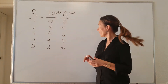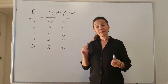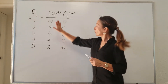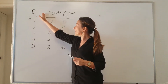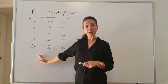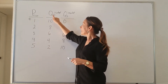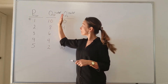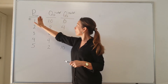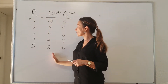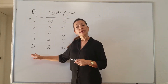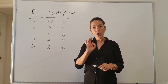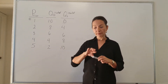We're going to start with our demand schedule and our supply schedule. Over here I've listed the prices and our market demand for ice cream. The price and the market demand for ice cream together form our demand schedule. Let's first draw out the demand schedule.